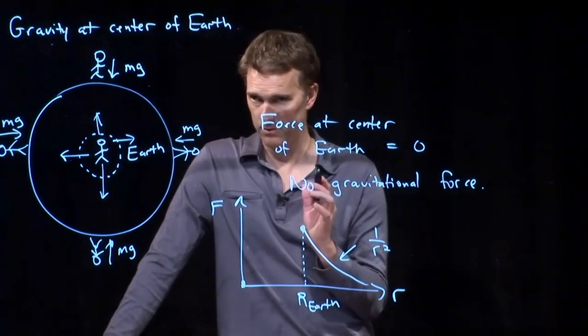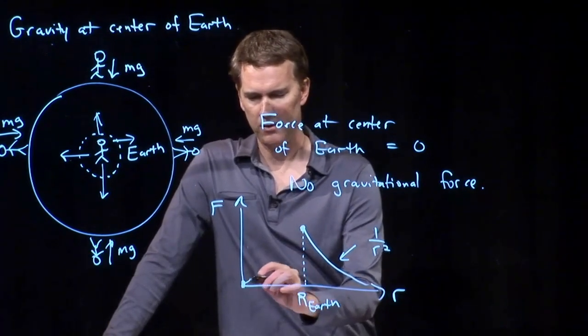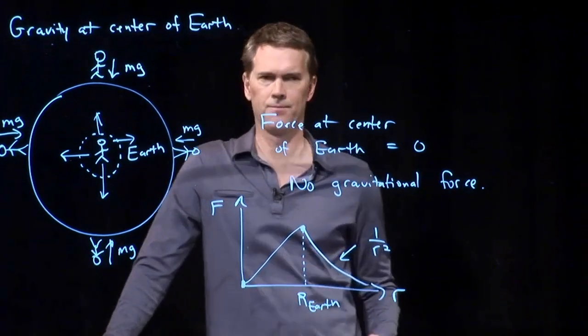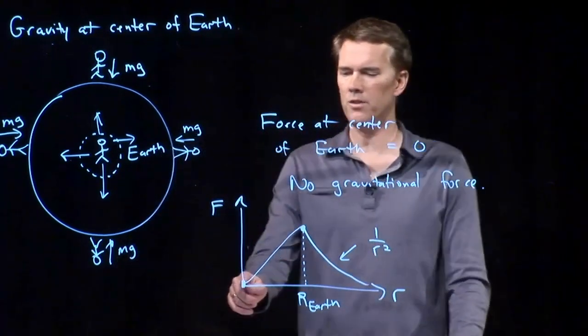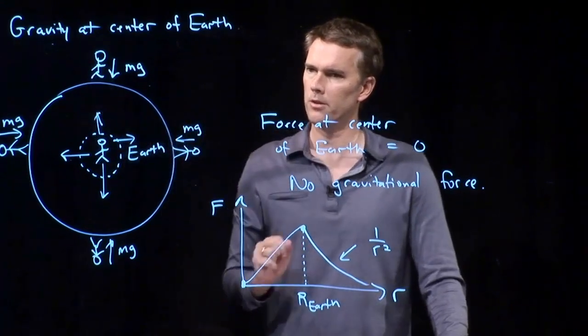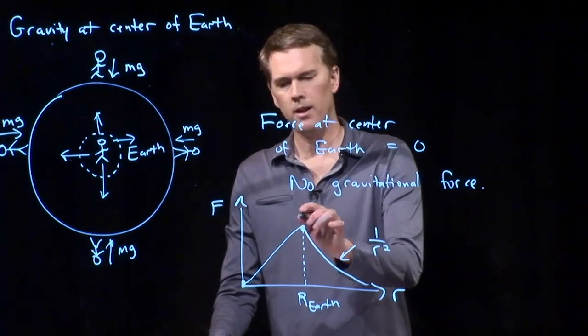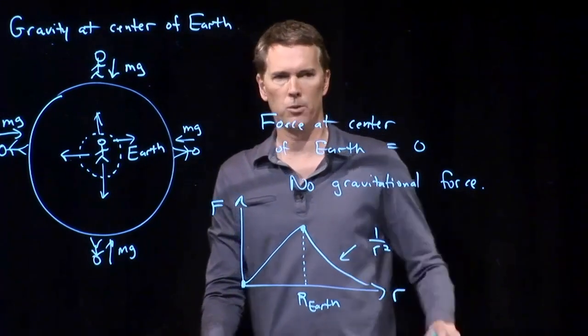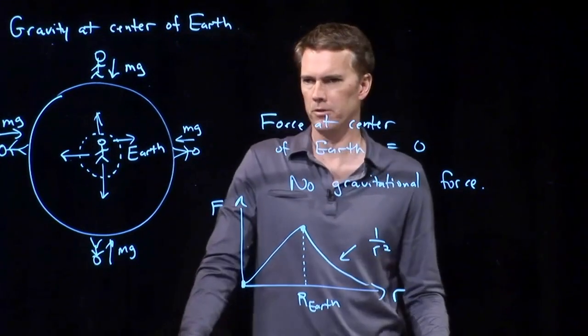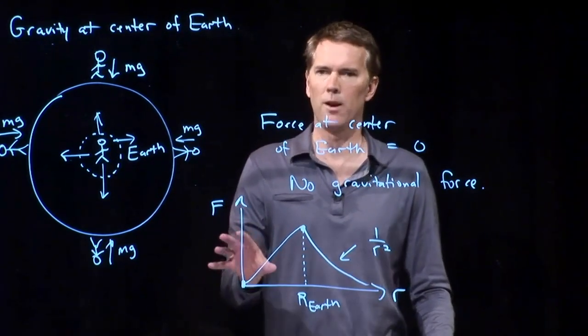It turns out, this is a complicated proof, but not impossible. It turns out it is linear. It increases linearly as you go up this tunnel towards the surface of the Earth. It reaches a maximum when you are at the surface of the Earth. And then it falls off again like 1 over r squared as you go away from the surface of the Earth. And you can prove this using something called Gauss's Law. So if you keep going in physics, look out for something called Gauss's Law. It's kind of a nice little proof.